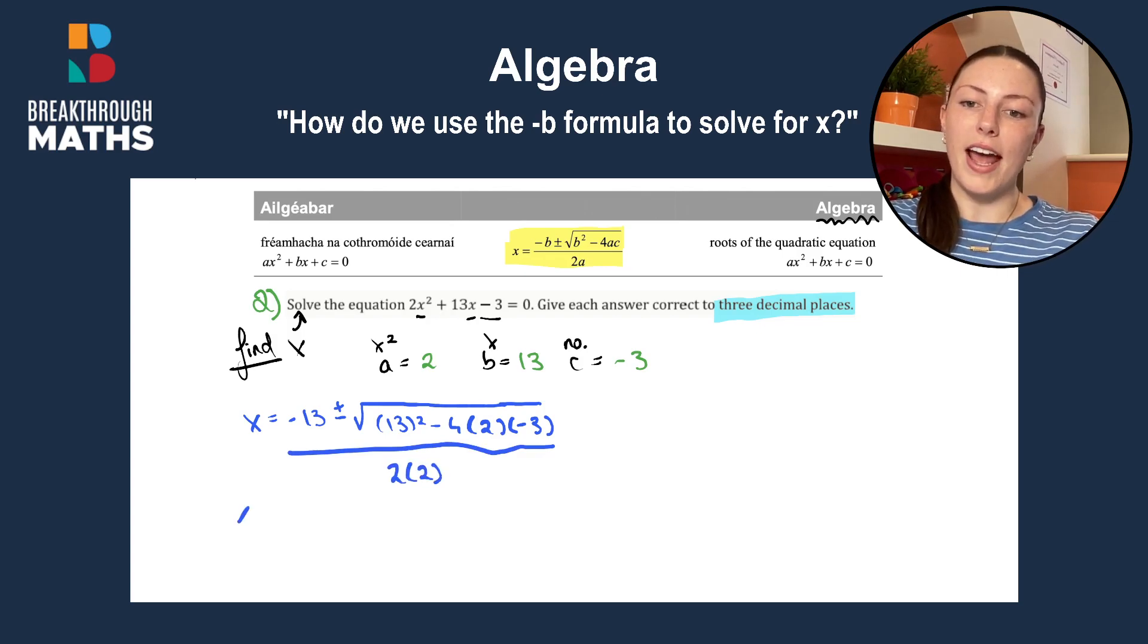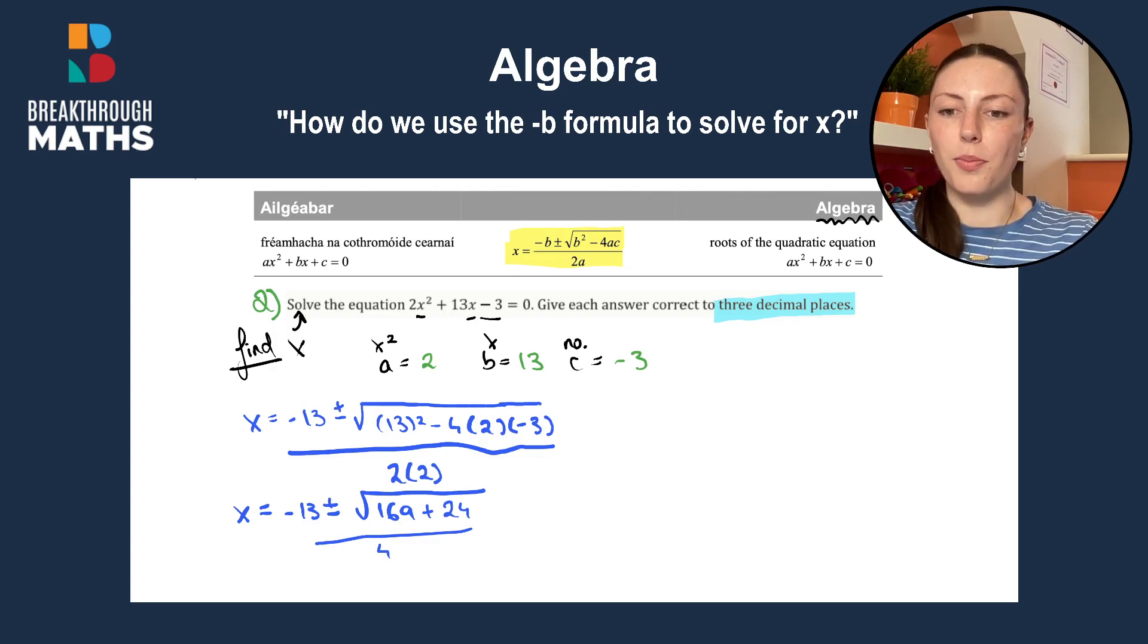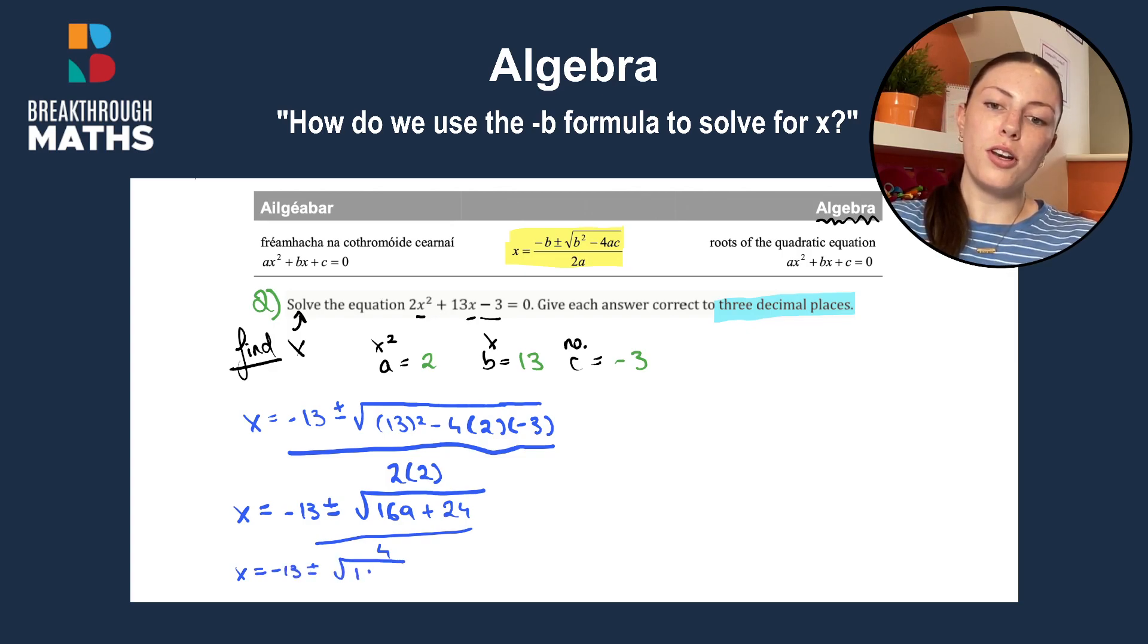So then we have x is going to be equal to minus 13, plus or minus, the square root of 13 squared is going to be 169. Then we have minus 4 by 2 by minus 3, and that gives us plus 24, all over 2 by 2 is 4. And tidying that up a bit, that leaves us with x is going to be equal to minus 13 plus or minus the square root of 193 divided by 4.